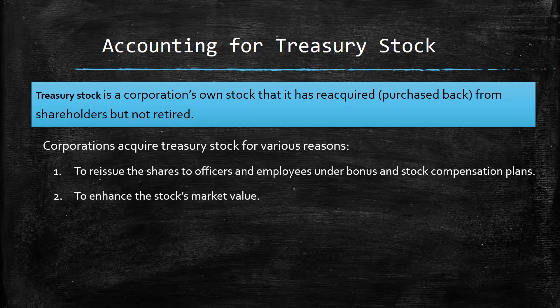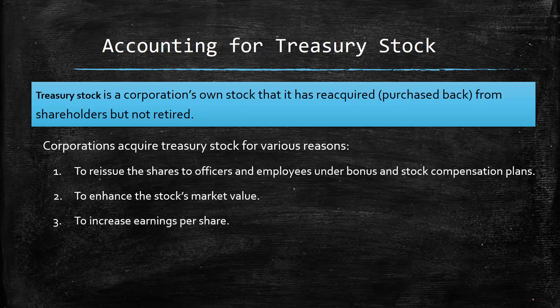Another reason might be to enhance the stock's market value. We are buying shares back from the market, so the shares are out there being traded. And if the management of the corporation feels that the share price is too low, they could buy back some shares, which would reduce supply. Supply and demand tells us if supply goes down, then prices tend to go up. That also could have an increase on earnings per share. If we take our net income divided by shares outstanding, if the shares outstanding decreases, that increases the calculation for earnings per share.